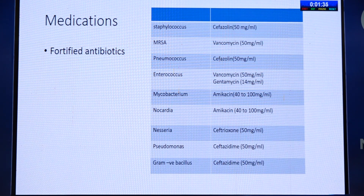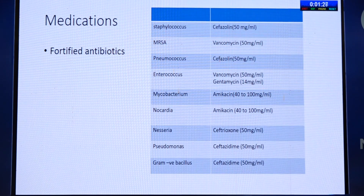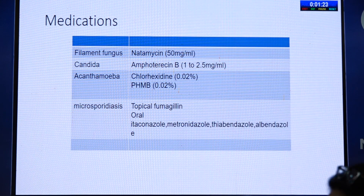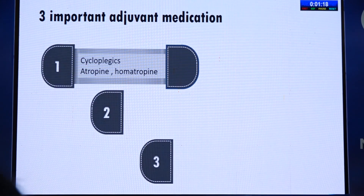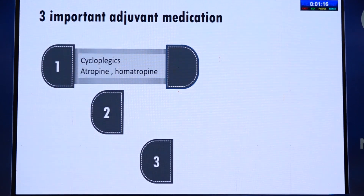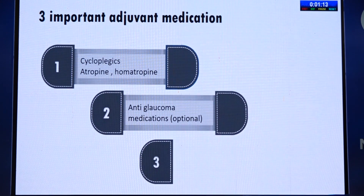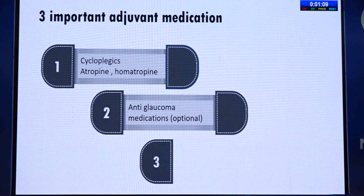For fungus we use natamycin, and for acanthamoeba we use chlorhexidine and PHMB. Three important adjuvant medications are: cycloplegic (atropine or homatropine); anti-glaucoma medications, which are optional and especially useful when IOP is elevated — seen particularly with significant hypopyon; and oral analgesics at presentation.